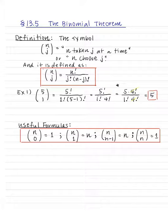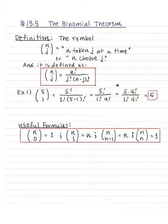Let's first go with the definition and the notation. The symbol is a little bracket with n on the top and j on the bottom. We call that 'n taken j at a time,' or more commonly 'n choose j.' That is defined as n choose j equals n factorial all over j factorial times n minus j factorial.